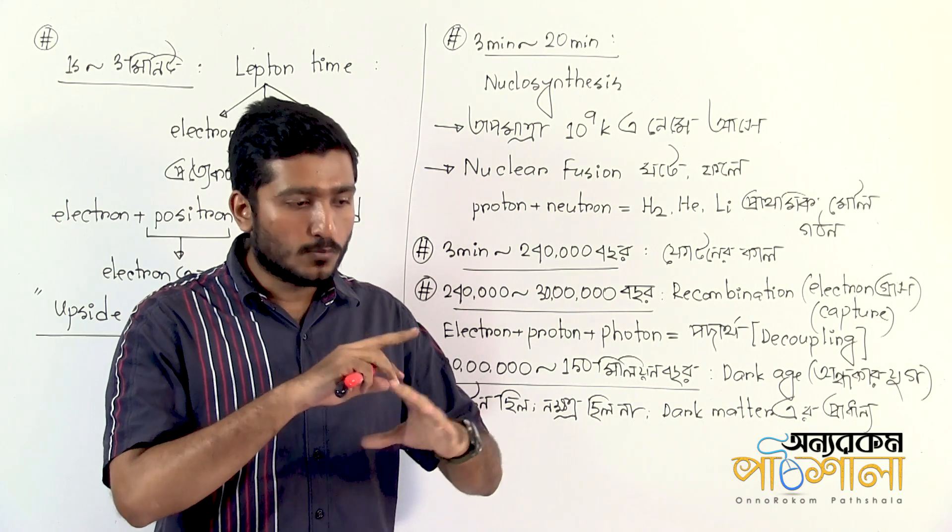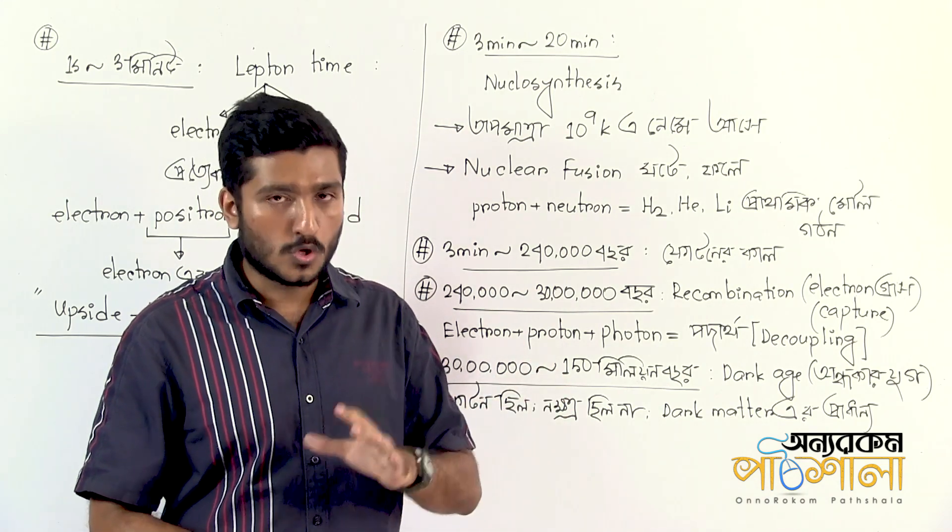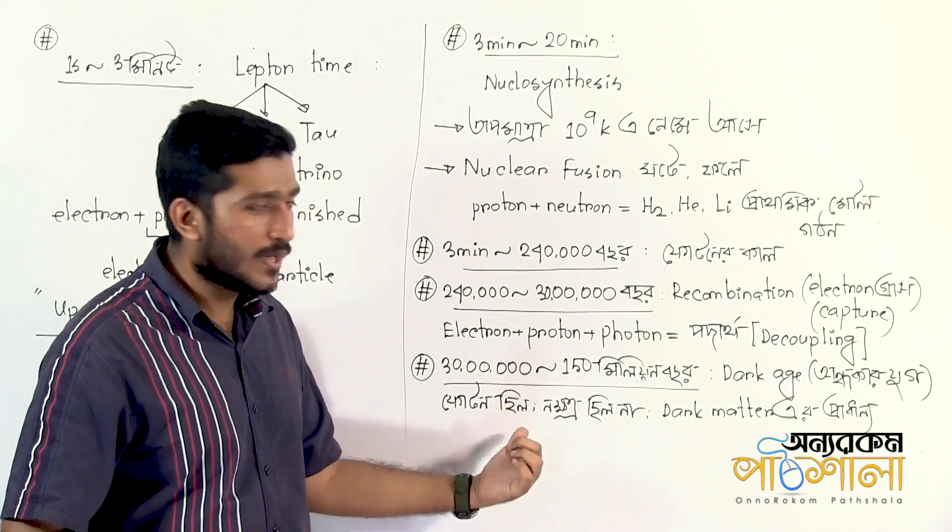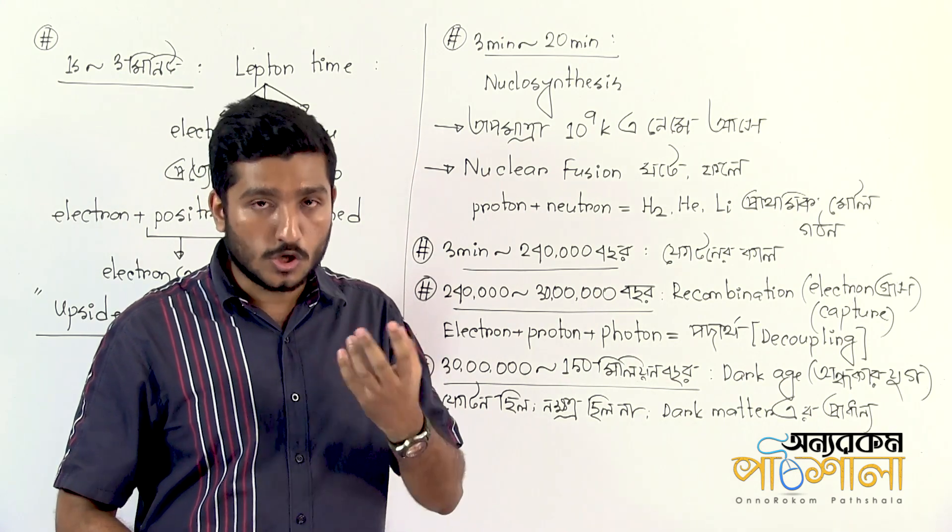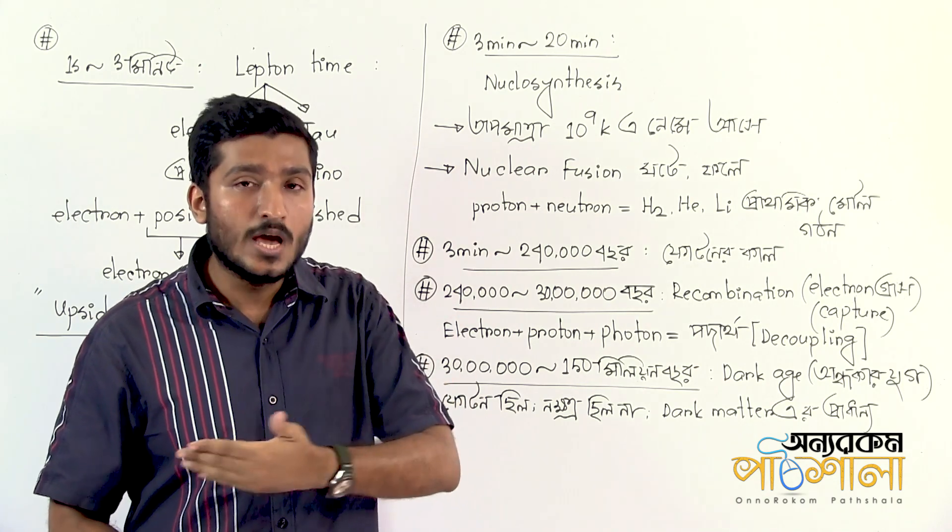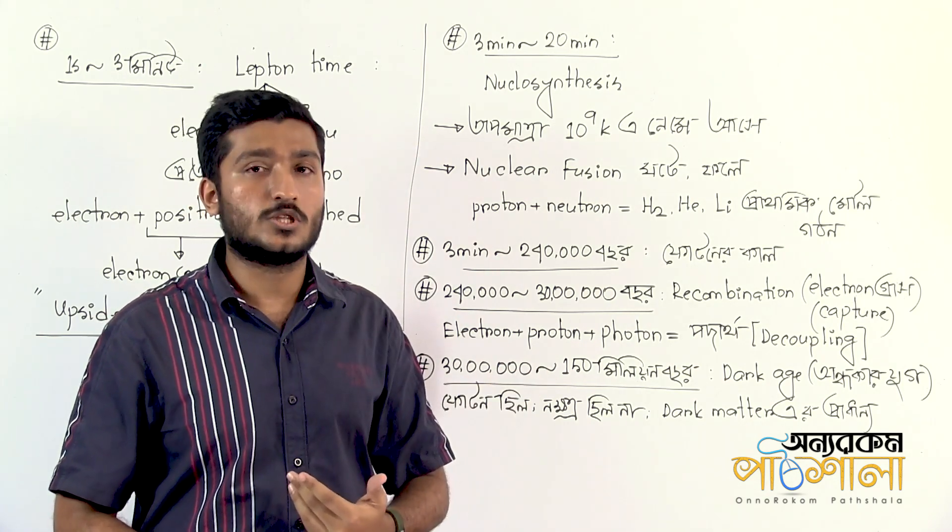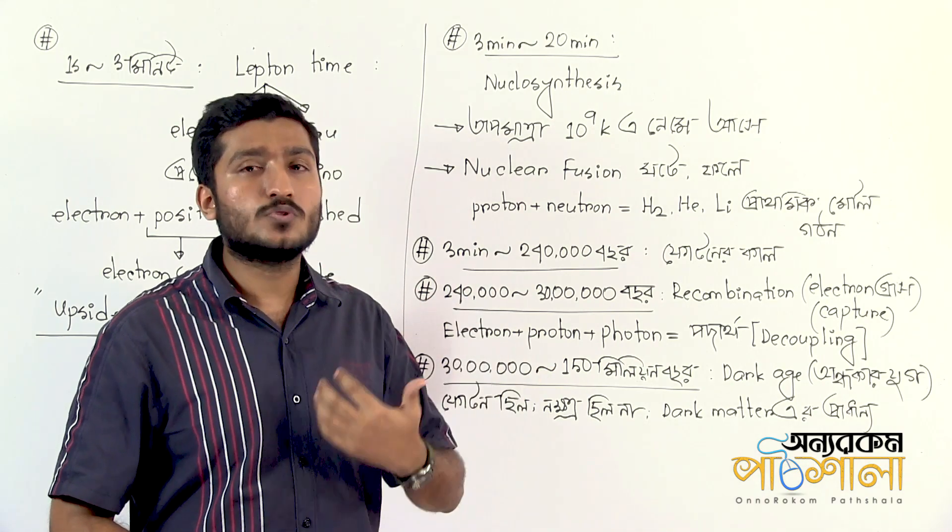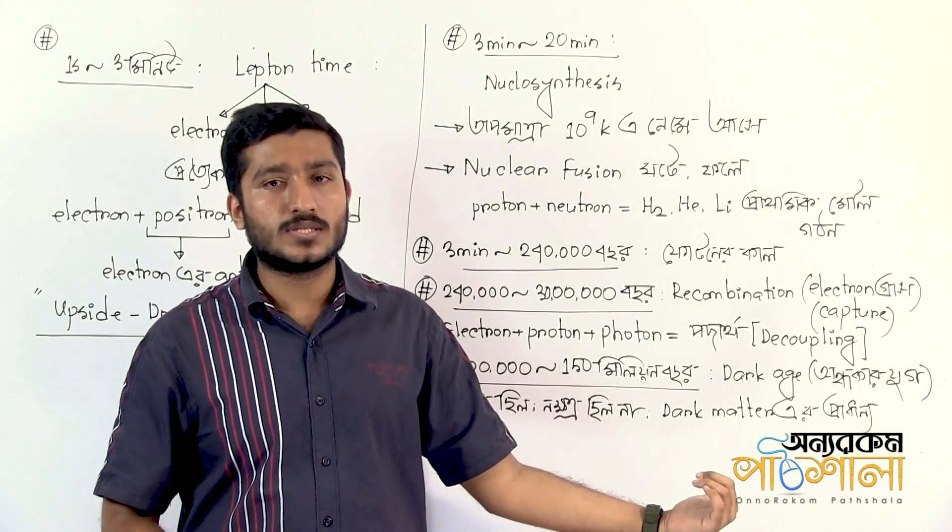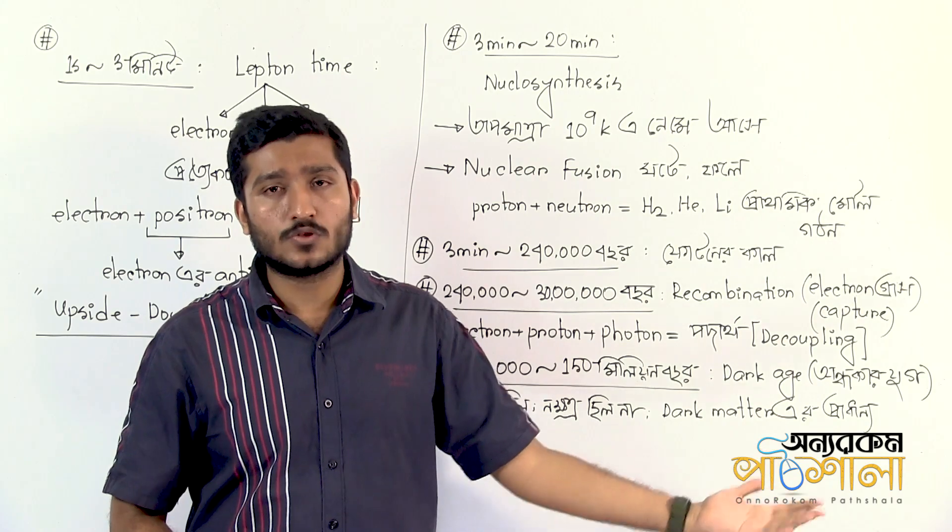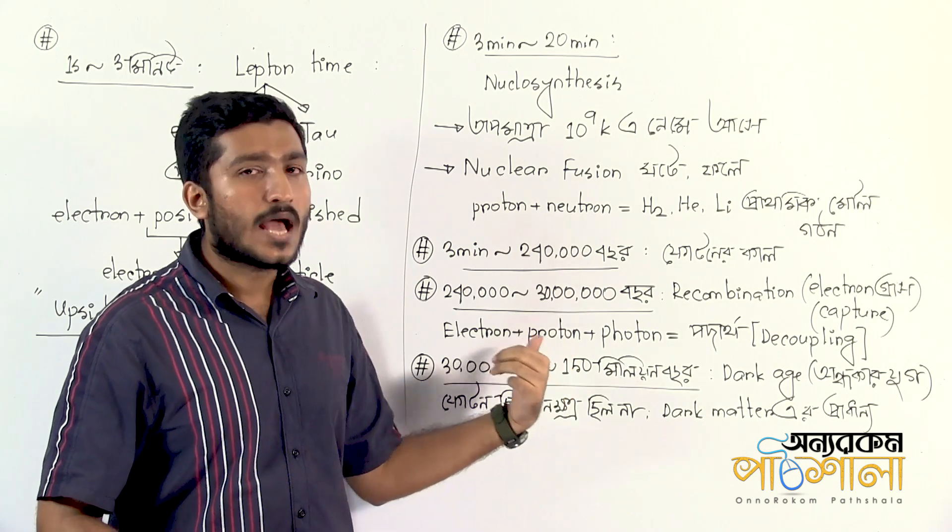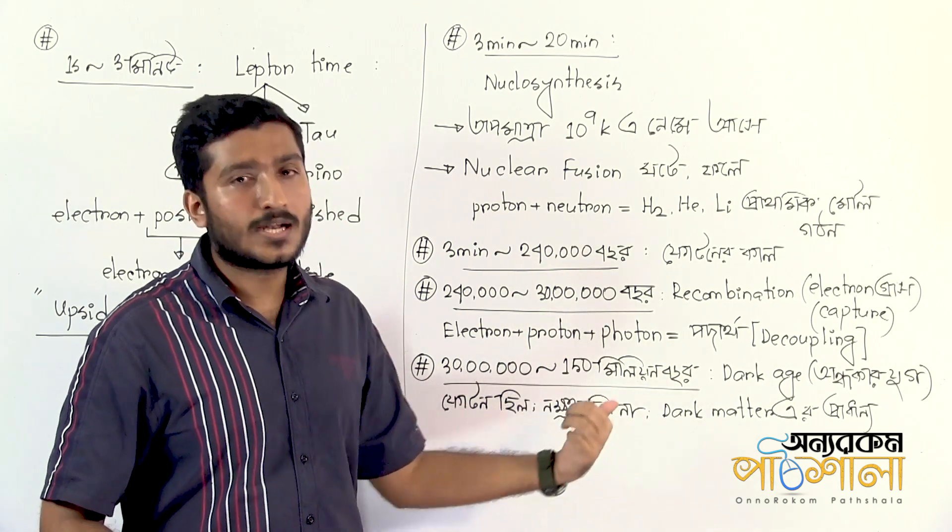Following recombination and decoupling, the universe enters the Dark Age. This period is called the Dark Age because, although photons can now travel freely, there are no stars or galaxies yet to emit visible light. The universe is filled with neutral hydrogen gas and dark matter. Dark matter and dark energy play crucial roles, though they remain mysterious. Photons from the decoupling era form what we now observe as the cosmic microwave background radiation.